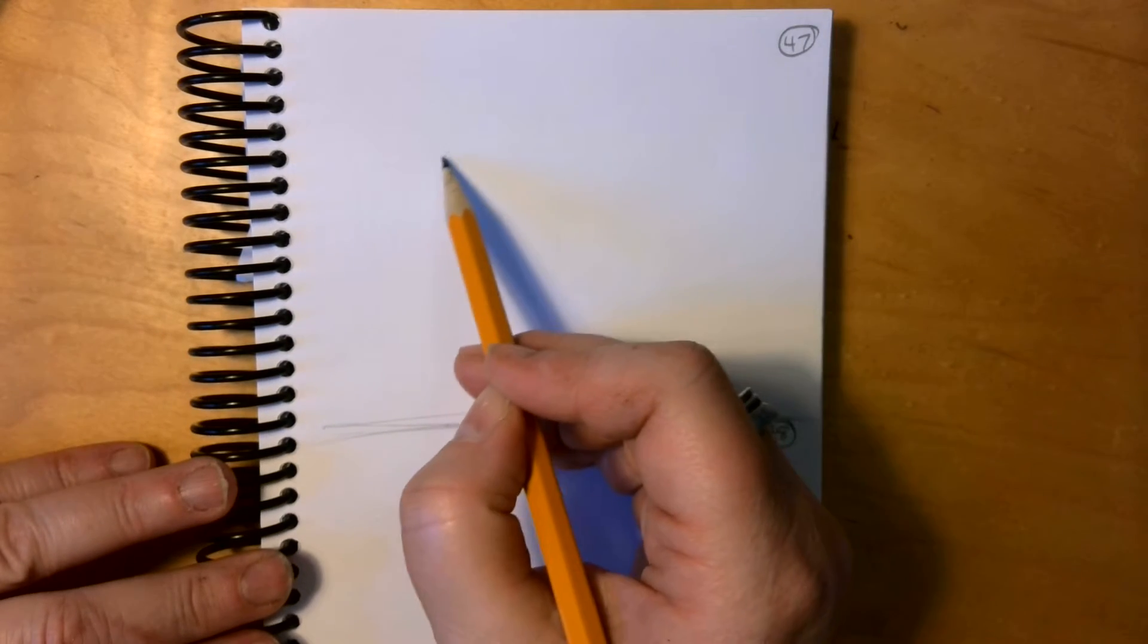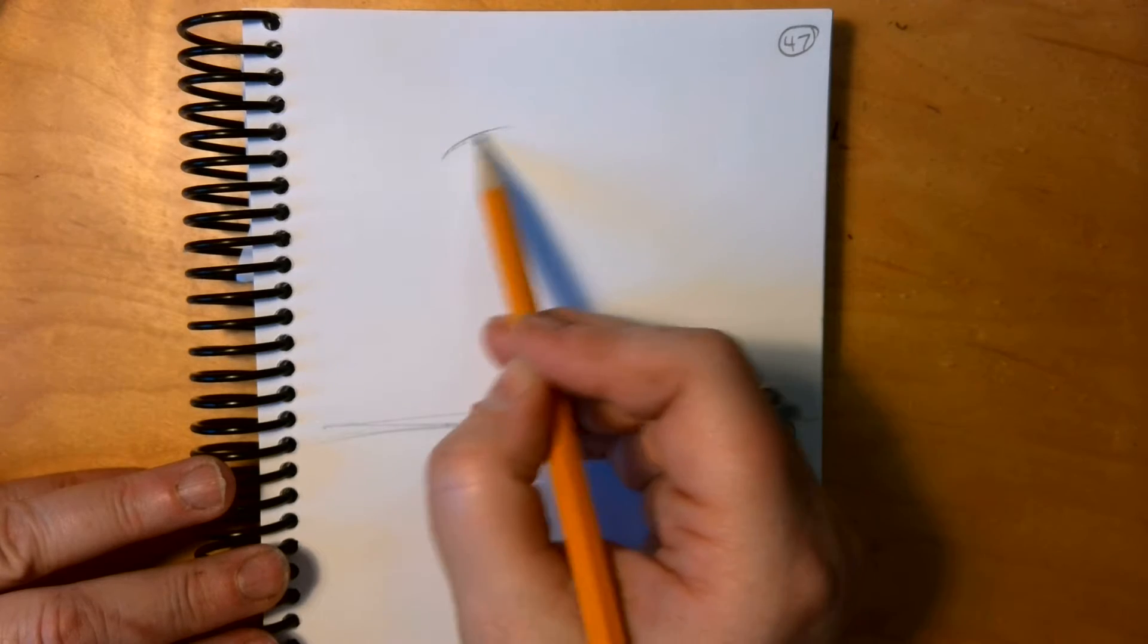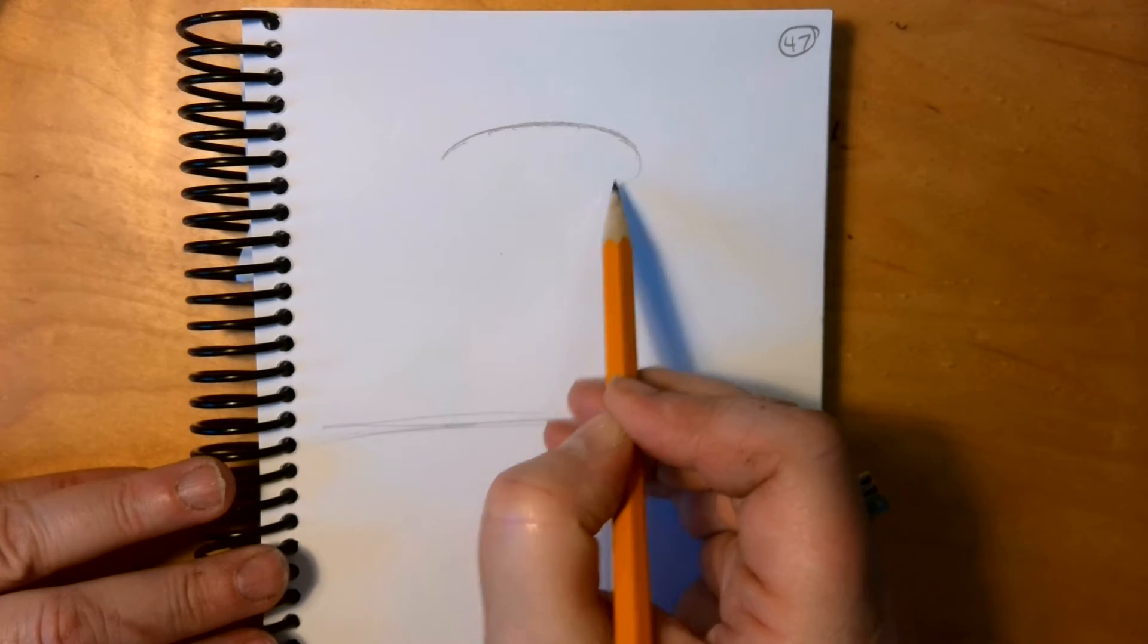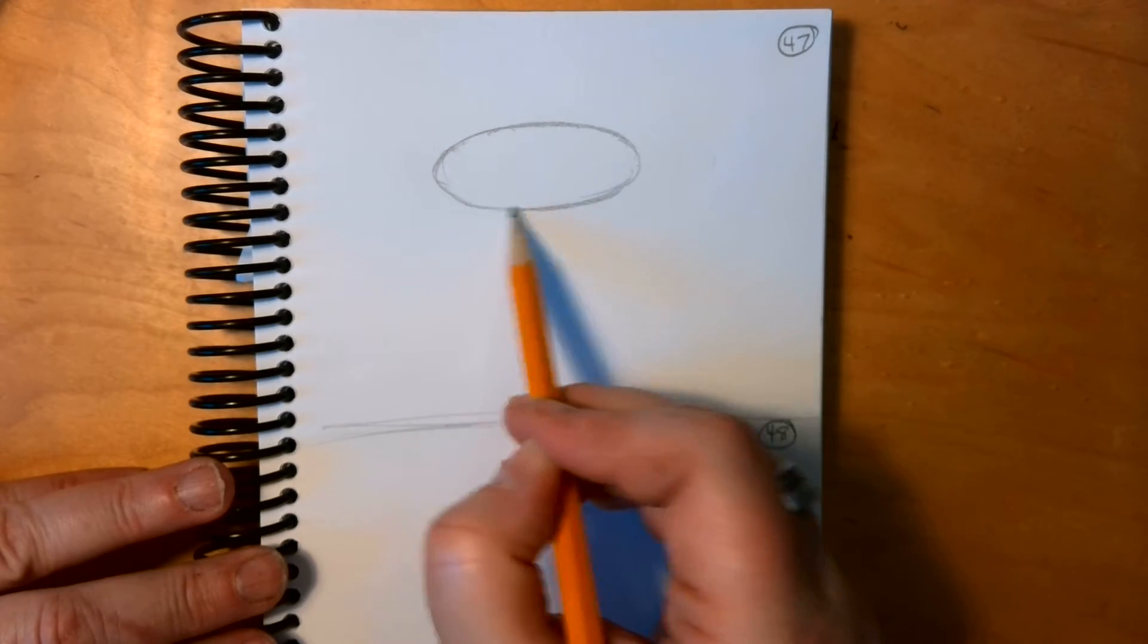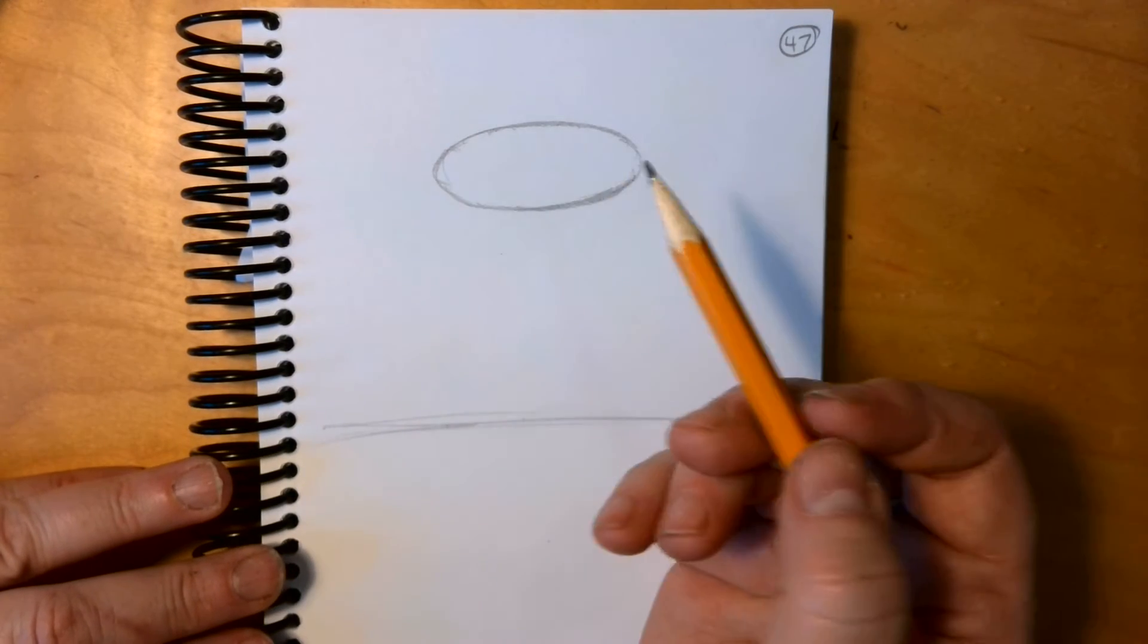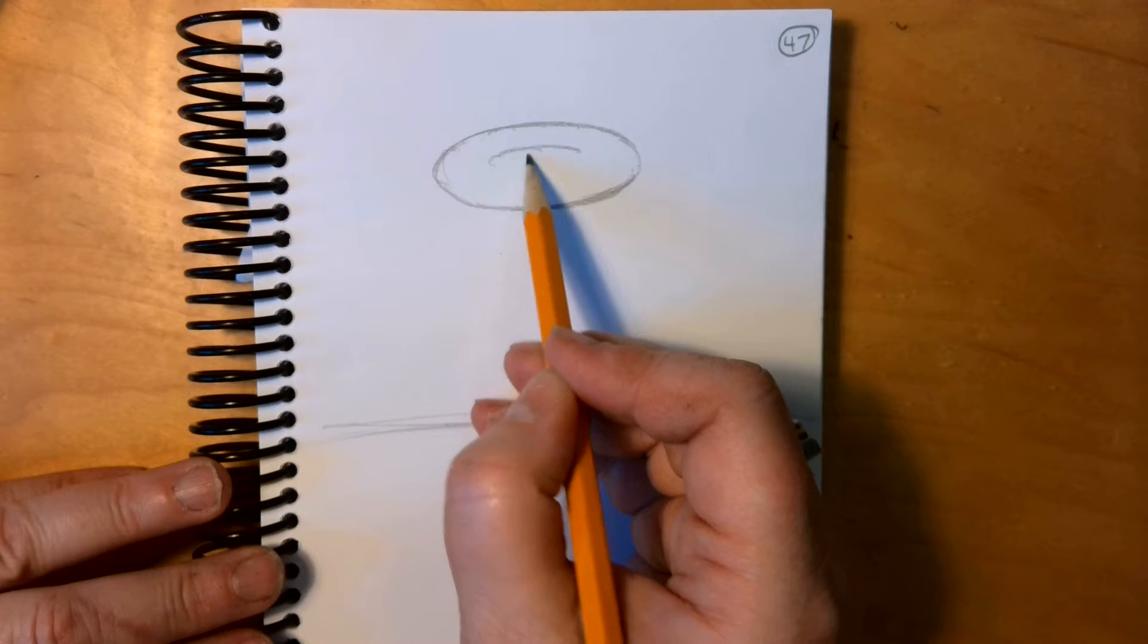Today you're going to do warm-up 47. We're going to start with a large oval and I'm going to put a smaller one inside.